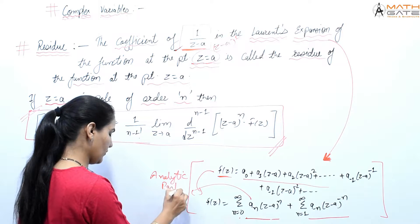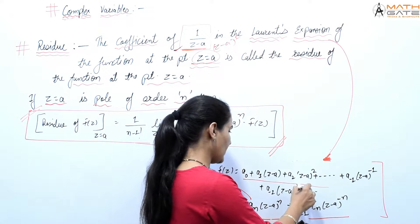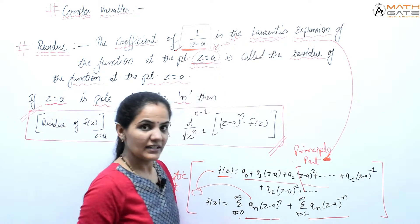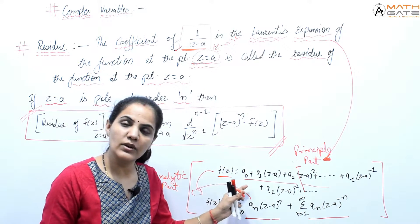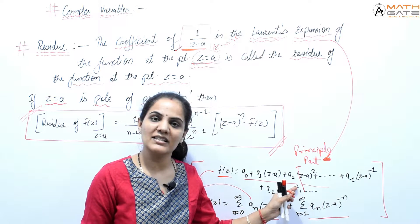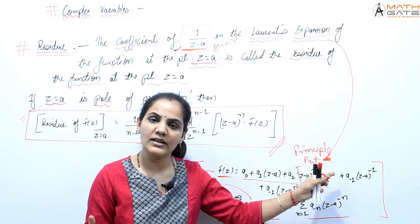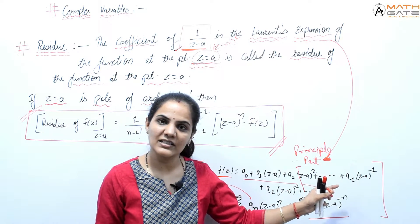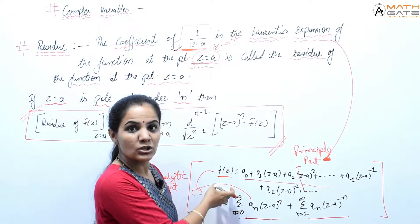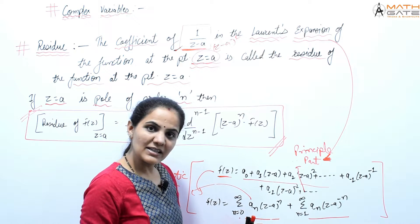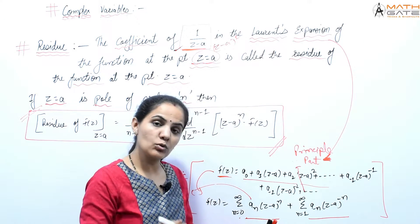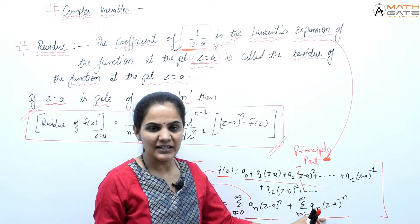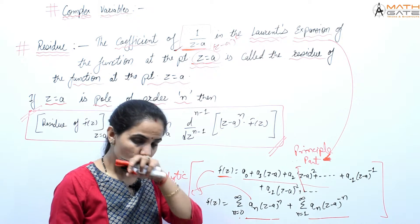The analytic part of the Laurent series is the positive-power portion, and the other part — a₋₁(z−a)^(−1) + a₋₂(z−a)^(−2) + ... — is called the principal part of the Laurent series. The positive part can be written as summation aₙ(z−a)ⁿ, and the a₋₁, a₋₂ part as summation a₋ₙ(z−a)^(−n).